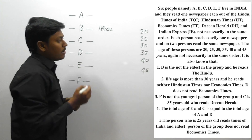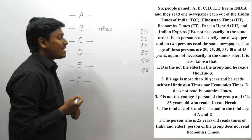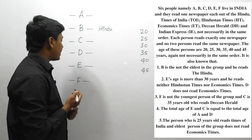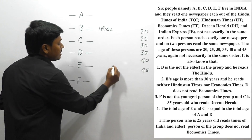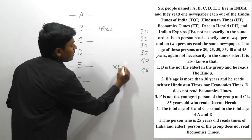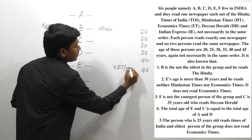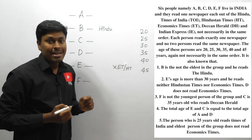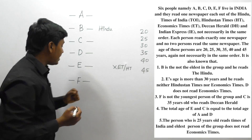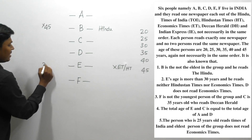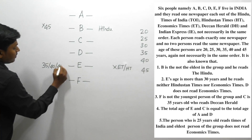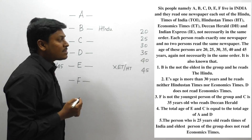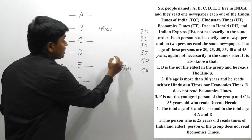Point number two: E's age is more than 30 years, and E reads either Indus Thorn Times or Economic Times. The person E is not reading Economic Times and also not Indus Thorn Times yet confirmed. Since E's age is more than 30 years, it can be either 35, 40, or 45 — these are the possible ages of E. Additionally, person D does not read Economic Times.